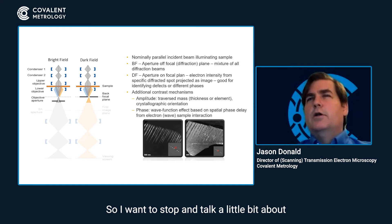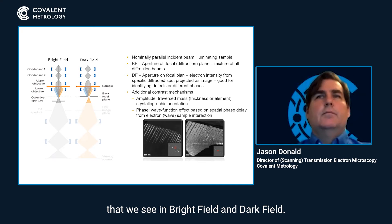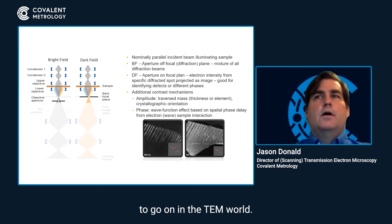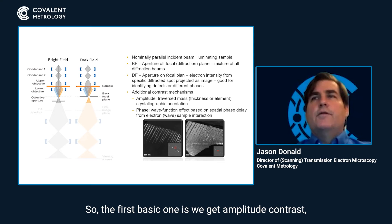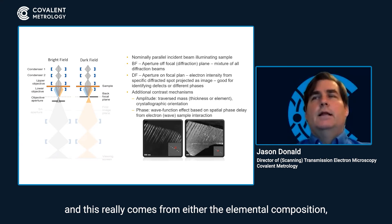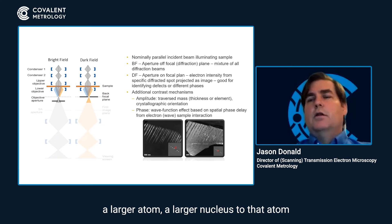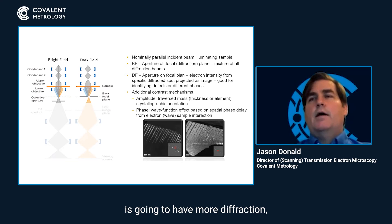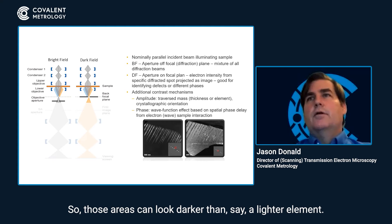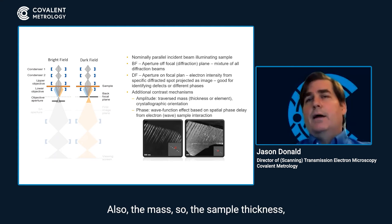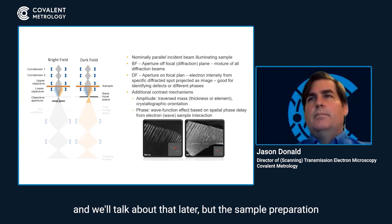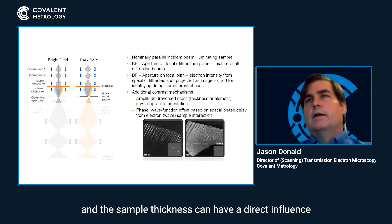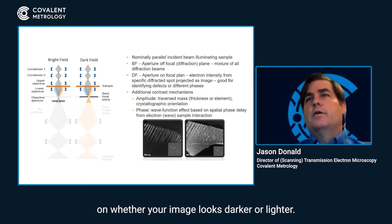I want to talk a little about the contrast mechanisms we see in bright field and dark field, because there are some interesting things that go on in the TEM world. The first basic one is amplitude contrast, which comes from either the elemental composition — a larger atom with a larger nucleus is going to have more diffraction and scatter the beam in a greater amount, so those areas can look darker than a lighter element. Also the mass and sample thickness can have a direct influence on whether your image looks darker or lighter.